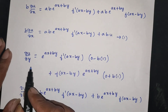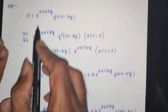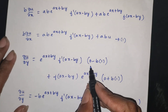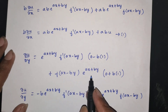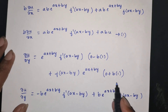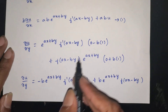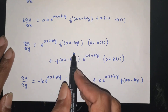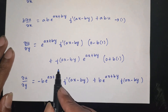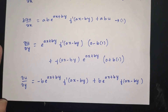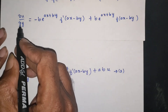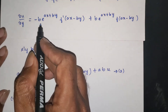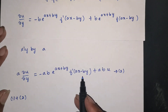∂u/∂y with respect to y: e power ax plus by times f dash of ax minus by, y coefficient 0 minus b into 1, plus f of ax minus by, e power ax plus by, b into 1. So ∂u/∂y equals minus b·e power ax plus by, f dash of ax minus by, plus b·e power ax plus by, f of ax minus by. Multiply by a: a·∂u/∂y equals minus ab·e power ax plus by, f dash of ax minus by.